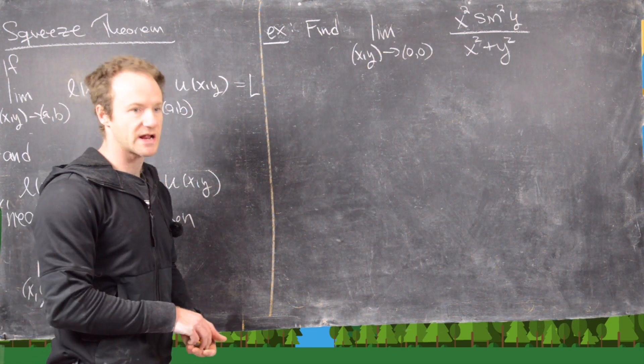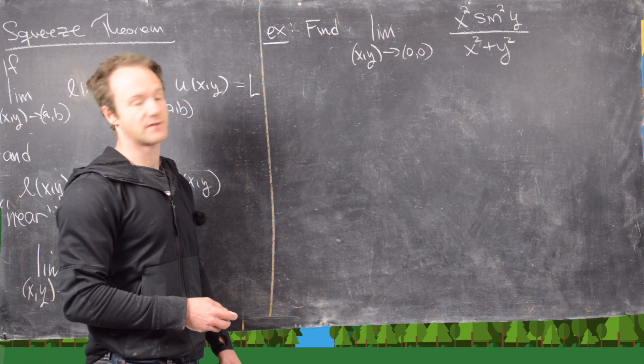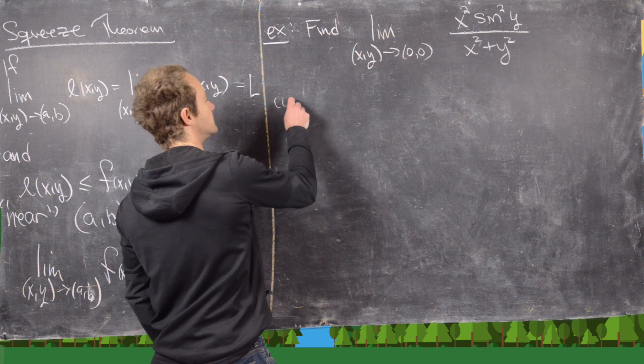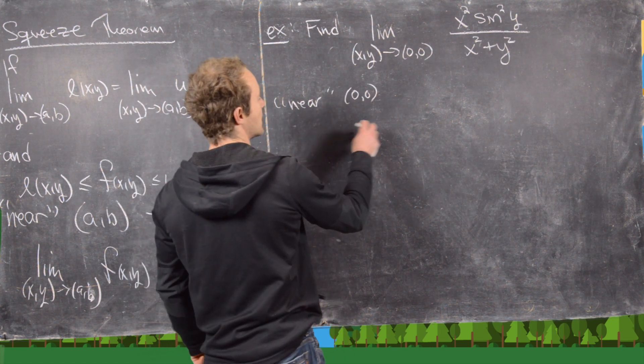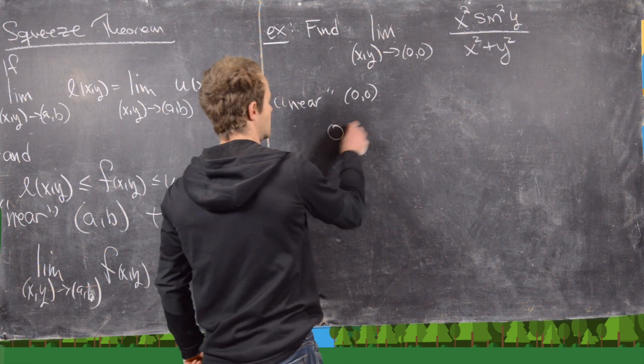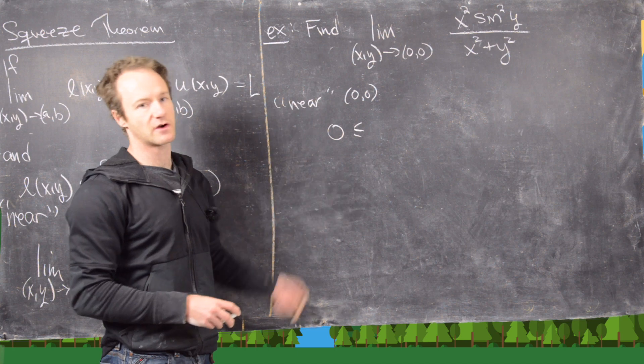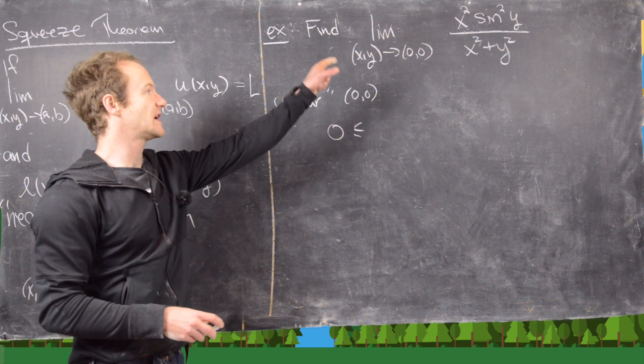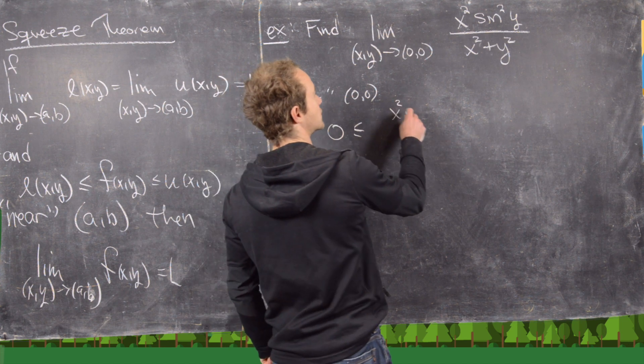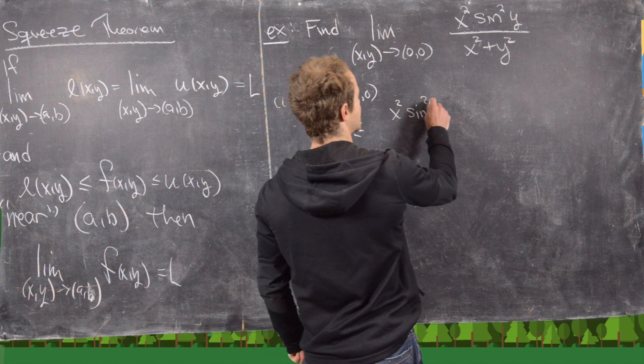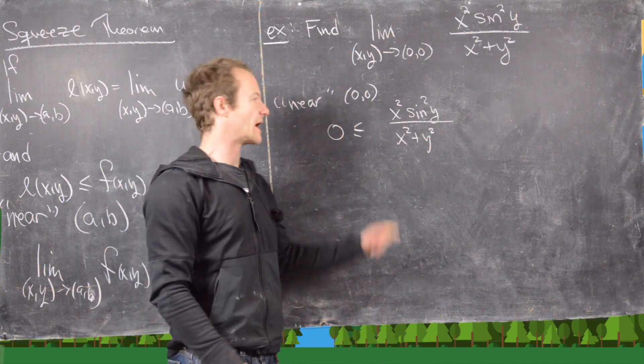And the tricky part here is finding what's happening to the bounding functions. So notice that near (0,0), we have the following. So all of these are positive, or bigger than or equal to 0 I should say, because everything there is squared. We have x squared sine squared y, which is over x squared plus y squared.